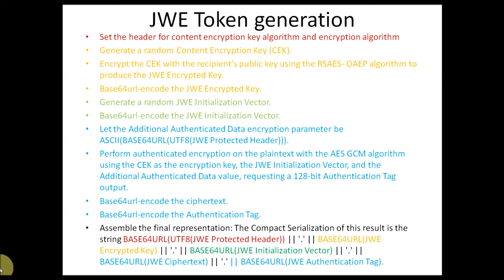We want the recipient side to also use the same key to decrypt the actual payload. So before sending, we encrypt the content encryption key with the recipient's public key using the RSA-OAEP algorithm. This algorithm value points to the ALG field in the header. When the token is sent to the recipient side, they will use this algorithm to decrypt the content encryption key using the recipient's private key. After encryption is done, we encode that encrypted key to Base64 format.